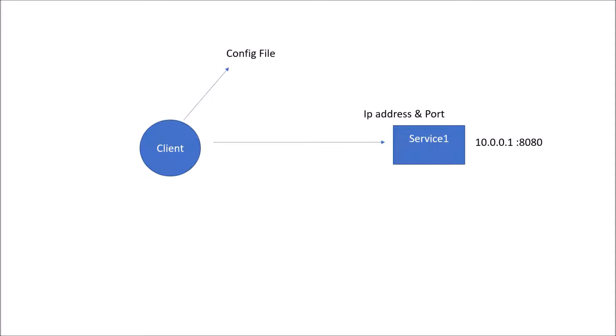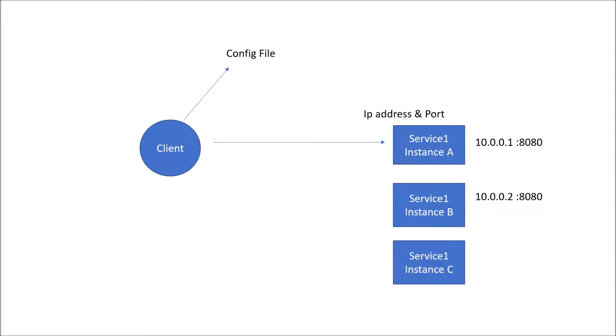In a traditional application, services are run on servers and the network location of these servers is generally static in nature. Moreover, in order to prevent system failure or service failure, we would require different instances of the same service — for example, service1 instance A, service1 instance B, and service1 instance C, each running on a different machine. The client would read the IP address and port of these instances from the configuration file and, using a load balancer, call either instance A, B, or C.